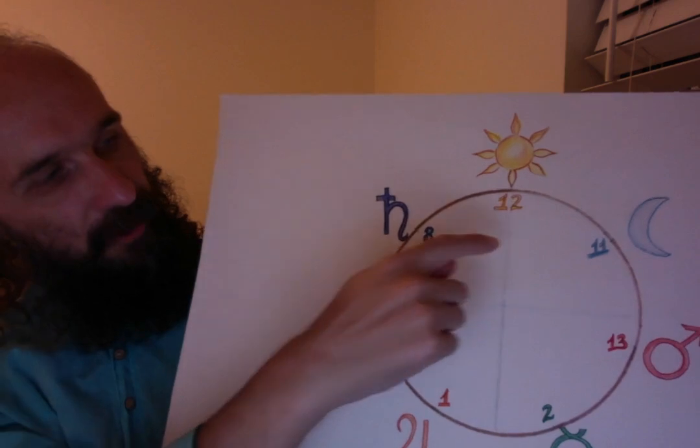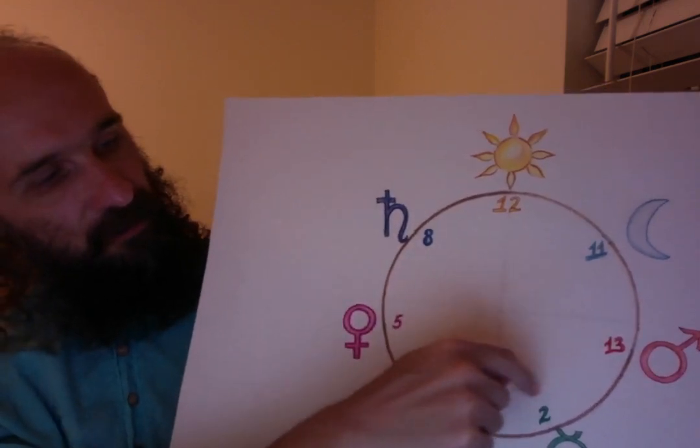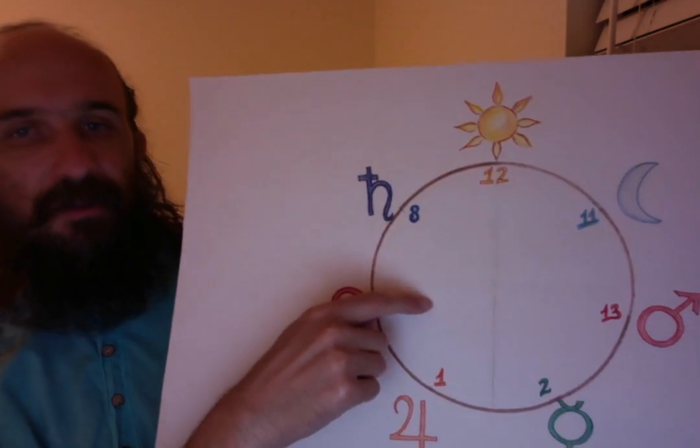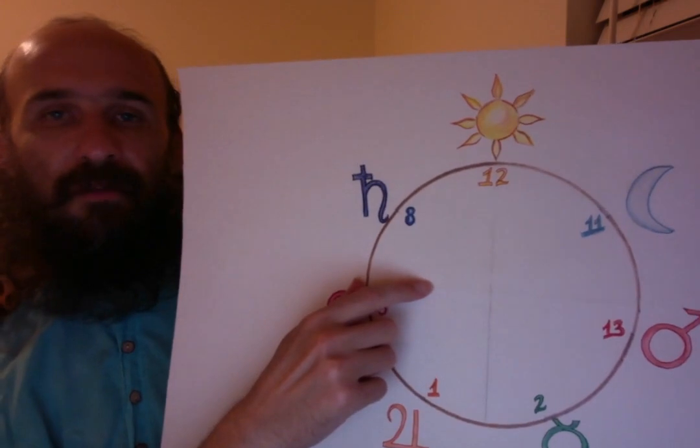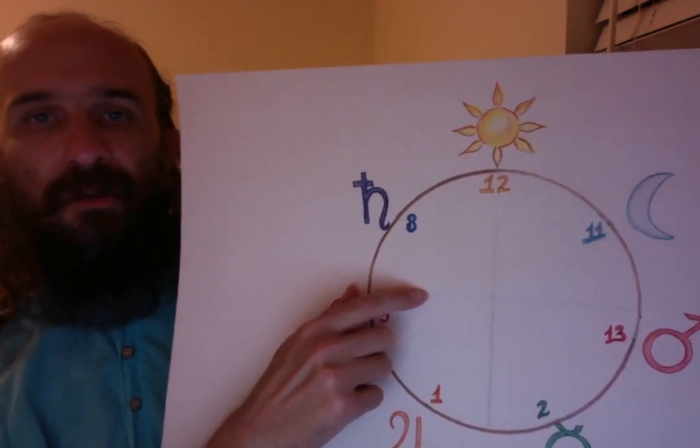And you're probably wondering why these numbers aren't 1, 2, 3, 4, 5, 6, 7. This is going to be explained in subsequent videos, but first we have to learn modular arithmetic.